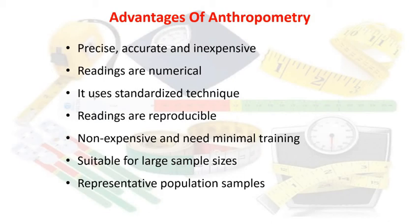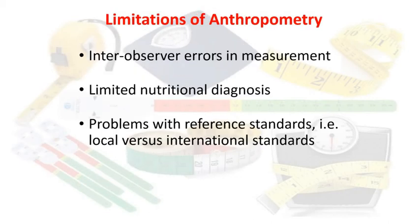The anthropometric method is suitable for large sample sizes; in community-based studies we may take a sample size of 400 or more, and it is the easiest way to take measurements. Results from a representative population sample can be generalized. Limitations include inter-observer errors in measurement — for example, if an observer makes a mistake in taking a person's height, there will be a difference of one to three inches.